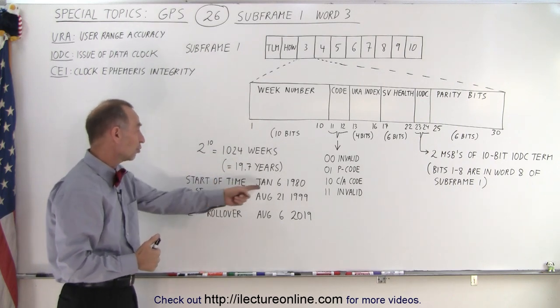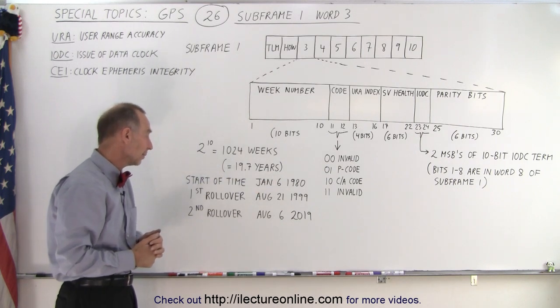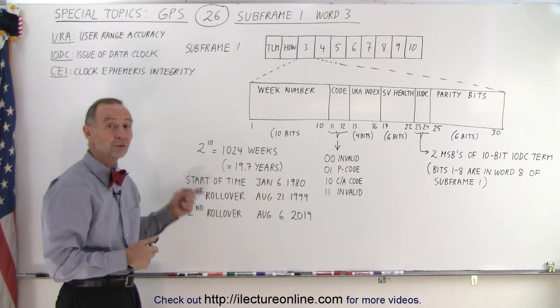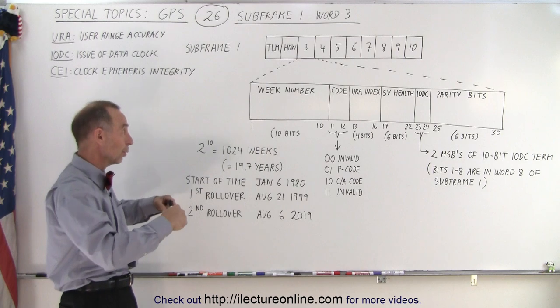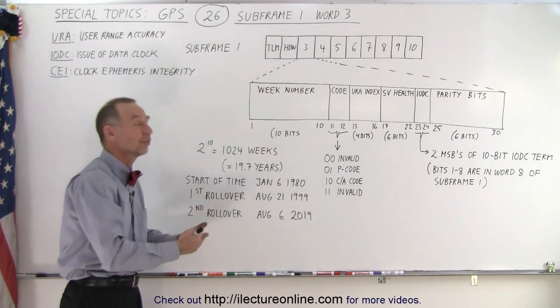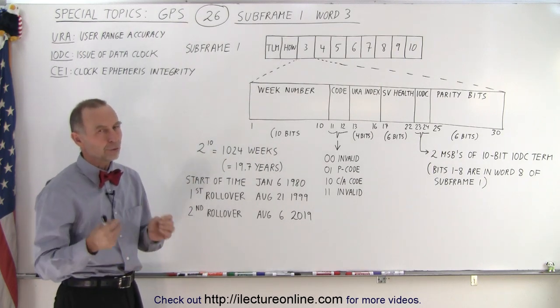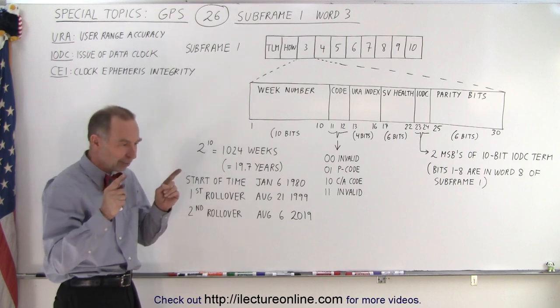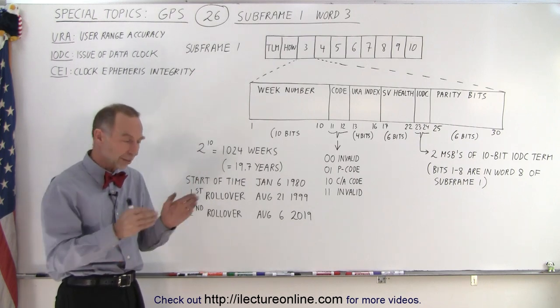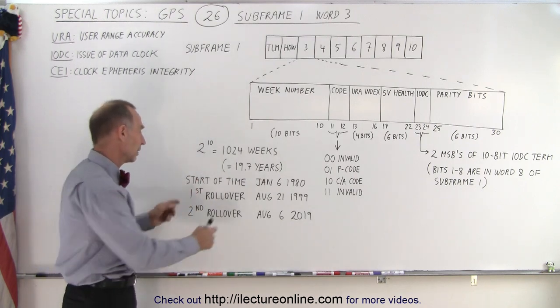Since we started on January 6th 1980, we've gone past two rollovers already. In other words, when the whole thing fills up and we have to start at zero again. So we do need to know which epoch, so to speak, we're in. What time period are we in? Are we in this time period or that time period?